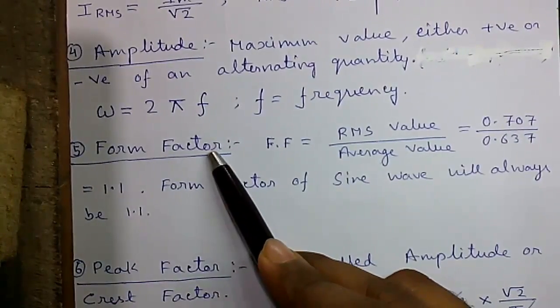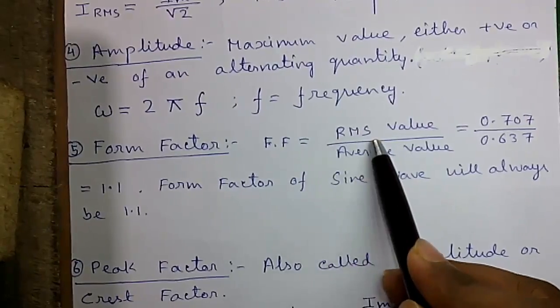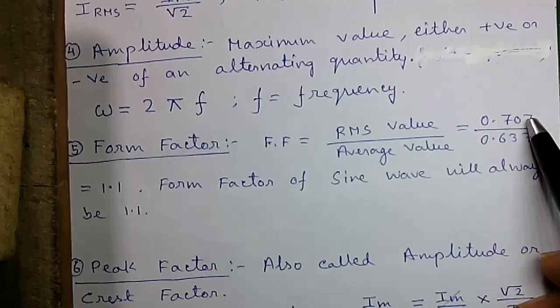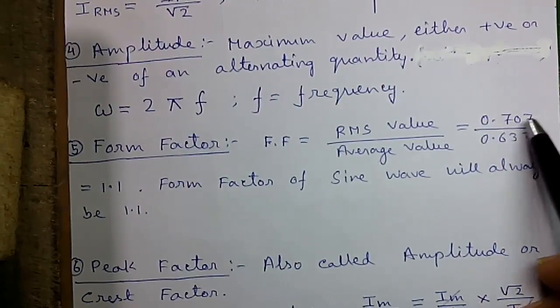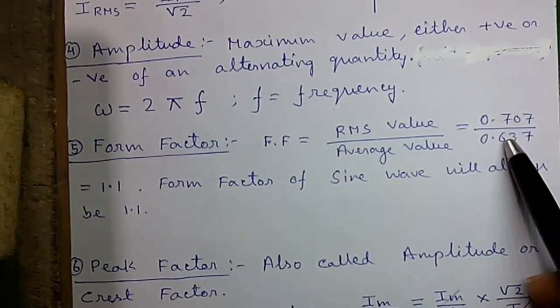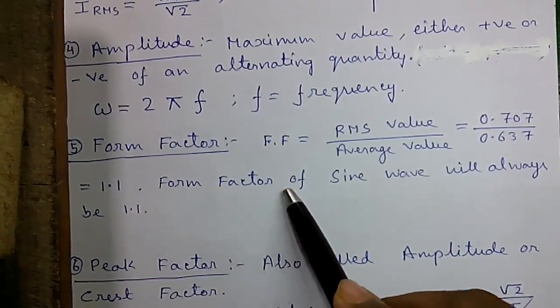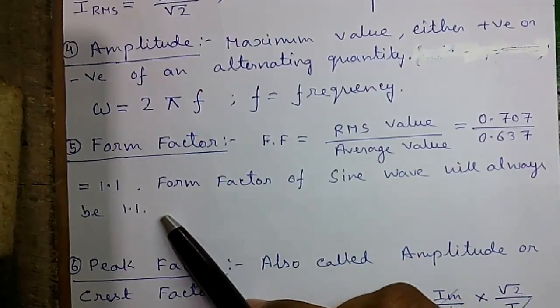Formula number 5, the form factor also called FF. FF equals RMS value by average value. So RMS value is numerically 0.707 and average value is numerically 0.637, so it is 1.11. The form factor of a sine wave is always 1.11.